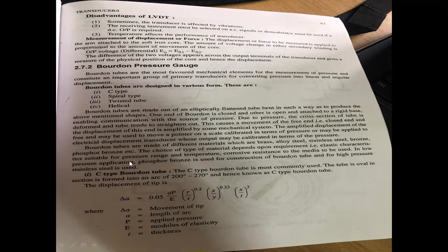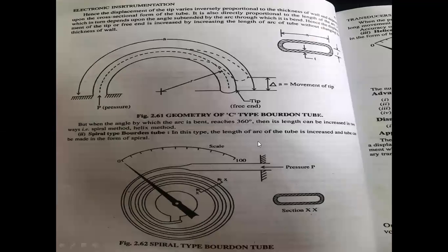For high pressure applications, stainless steel is used. The C-type Bourdon tube is the most commonly used. This tube is oval in shape and the arc spans from 200 to 270 degrees. When pressure is applied, the free tip end moves, displacing to a new position.